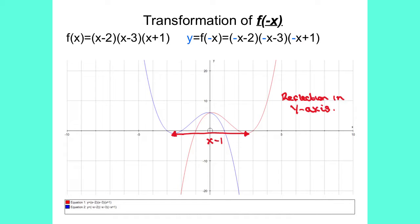The next transformation is f of minus x. So again, if we draw the graph f of x equals x minus 2, x minus 3, x plus 1, and then draw the graph y equals f of minus x, which is the same as minus x minus 2, minus x minus 3, minus x plus 1, you can notice that the graph is a reflection in the y-axis. So all the x-coordinates are multiplied by minus 1.